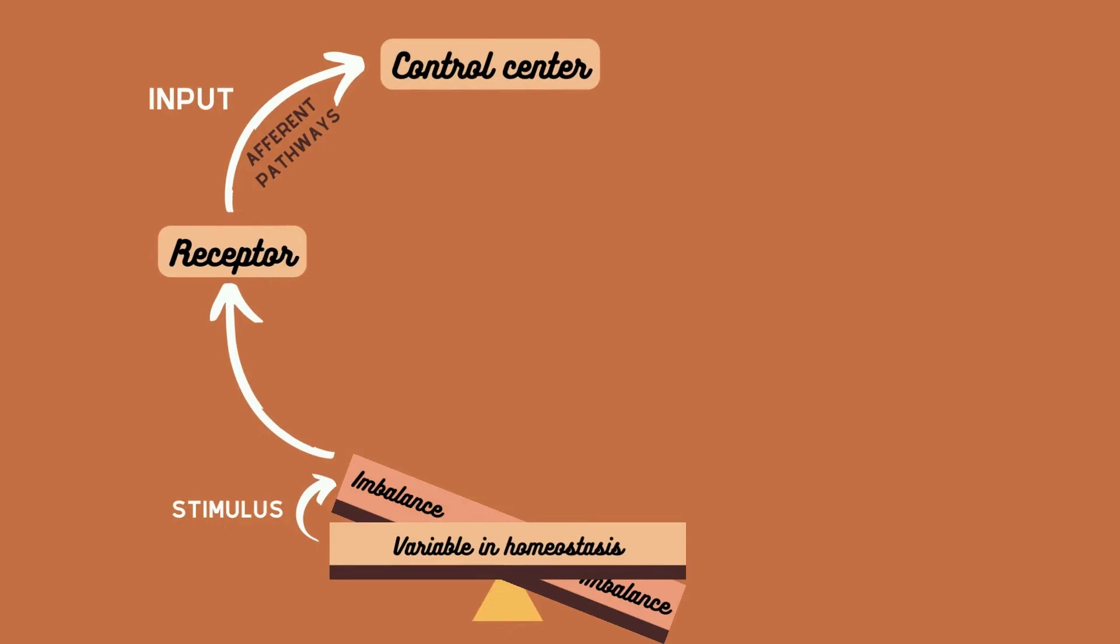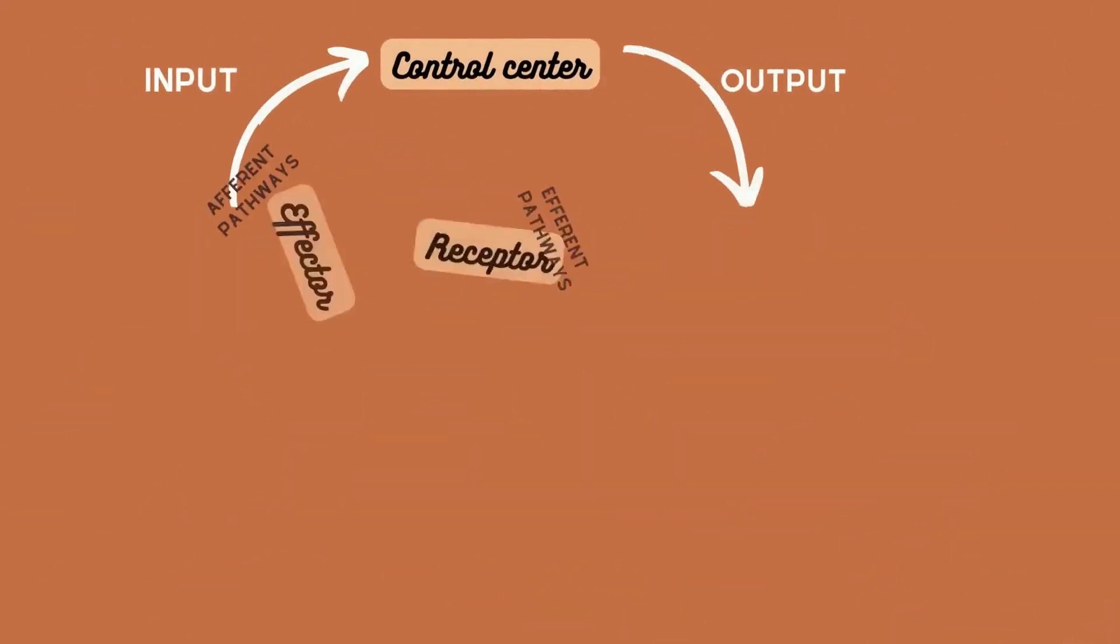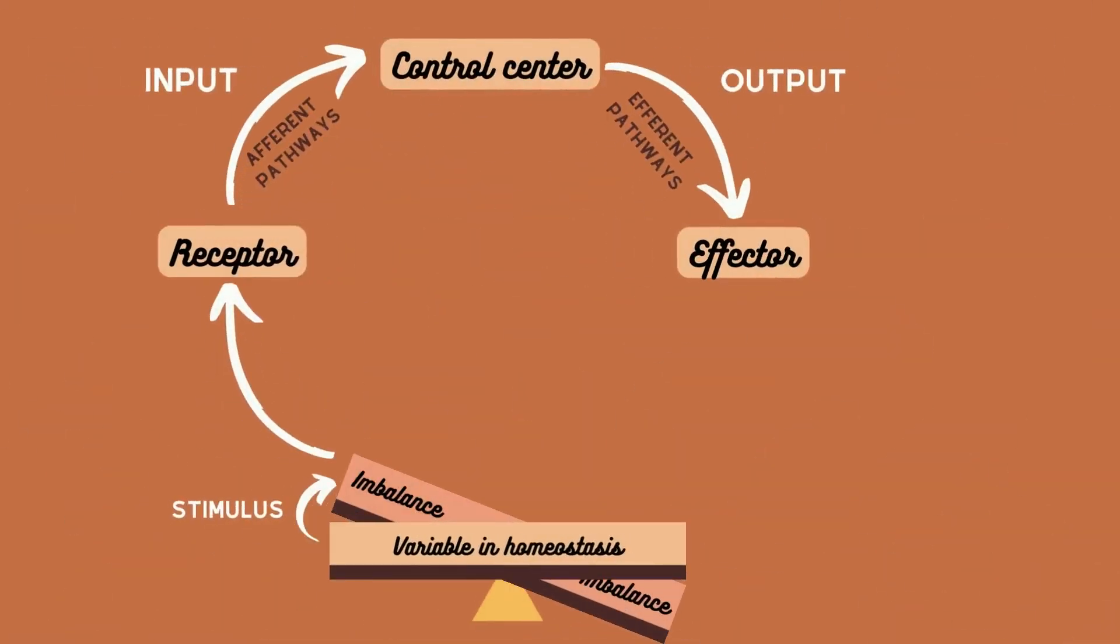The control system will analyze the information, then determine the appropriate response, for example removing the foot off the toy. After that, the control system will send the information to the effector along afferent pathways in order to activate the effector and respond to the stimulus.